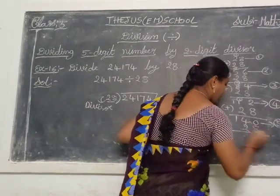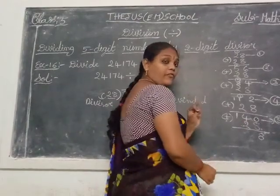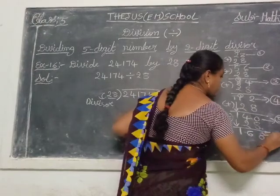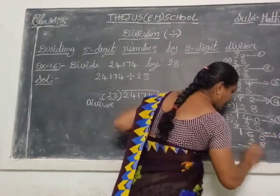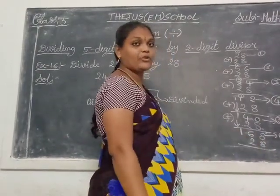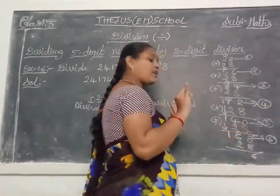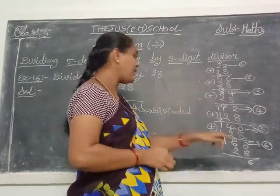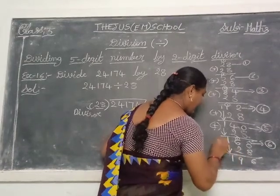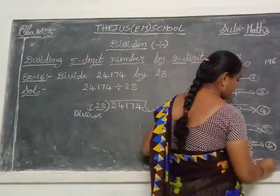Again add 28: 28 sixes are 168. Again add 28: 28 sevens are 196. Write here 196 — that is 7 times.